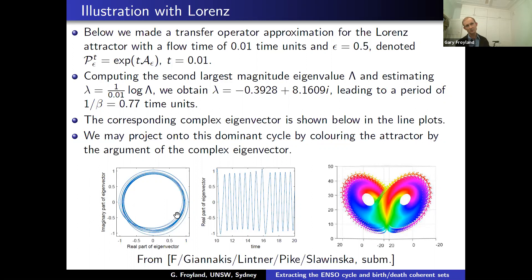As you proceed around the time series, you go around and around this complex eigenvector, normalized to have magnitude about one. The real part is approximately sinusoidal with period about 0.77, consistent with the time scale. You can project the Lorenz dynamics onto this dominant cycle by coloring the attractor by the argument of the complex eigenvector, using a periodic color scale. I'll show a movie: evolving that complex eigenfunction through one period — 0.77 time units — you go through one complete cycle.